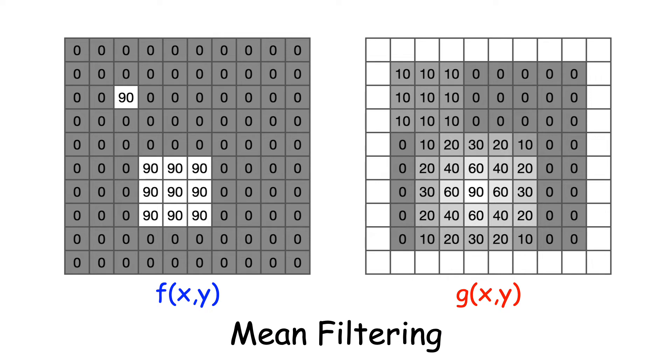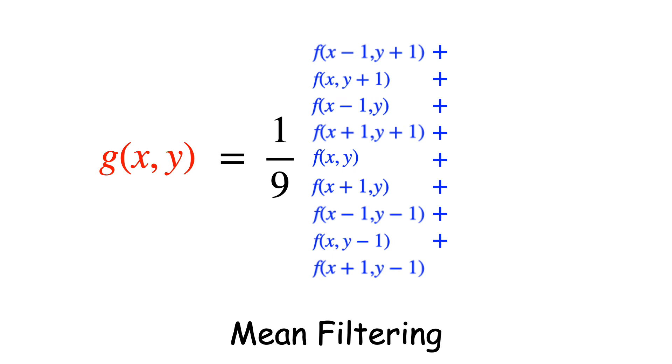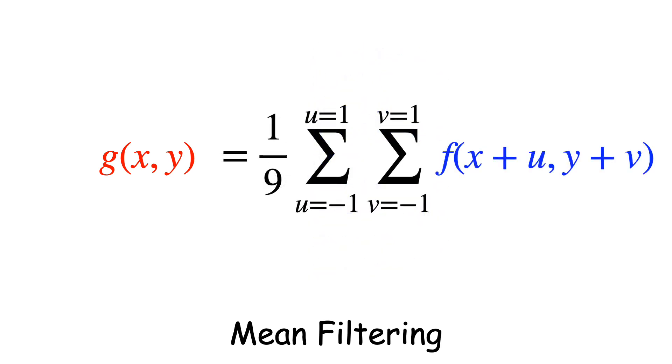All right, so what's the formula for mean filtering? We're going to take a pixel f of X comma Y and average it with this neighbor and all the others. Here's the formula, which you can write as a double summation. That's it.